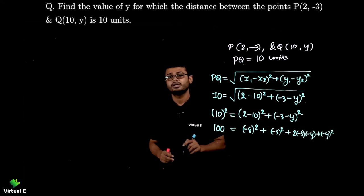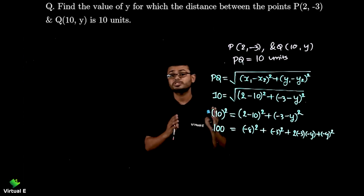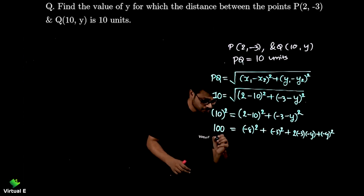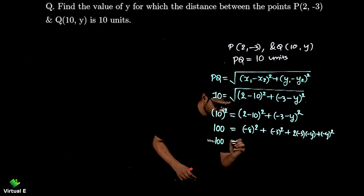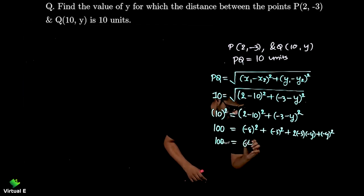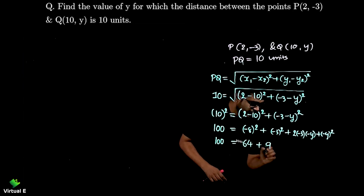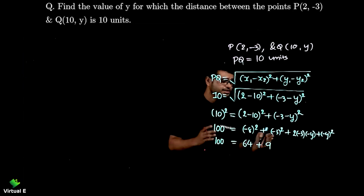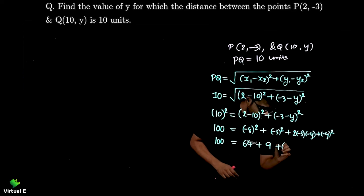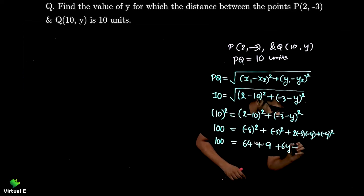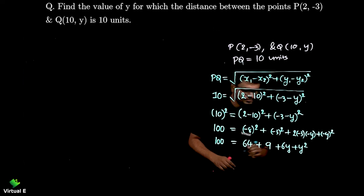Remember whenever you have both term negatives you need to substitute in proper way. So 100 as it is, square of -8 that is 64, then square of -3 which is 9. Here 2×3 are 6 and minus minus will become plus. So 6y then here y². Done.